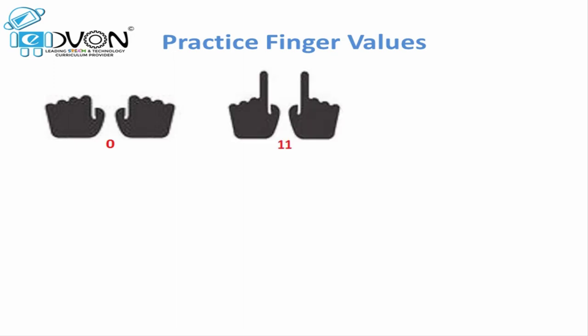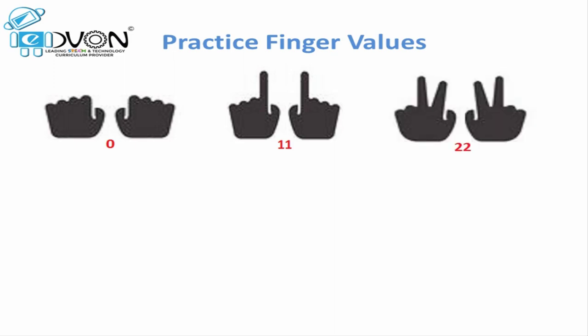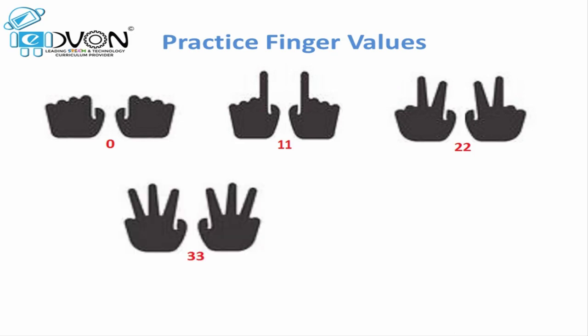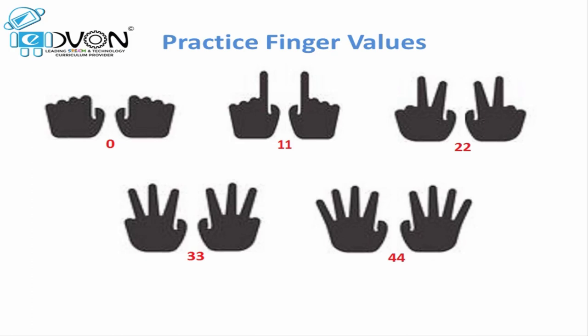In 11, we have one ten and one unit. For 22, we have two tens and two units, so we open two fingers on the left hand and two fingers on the right hand. For 33, we have three tens and three units, so we open three fingers on both hands. When all four fingers of both hands are open, it represents the value 44.